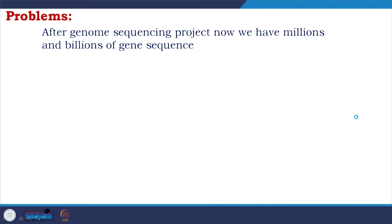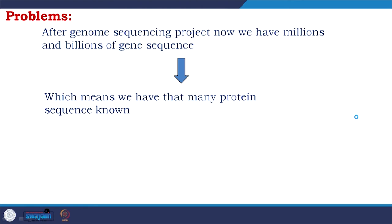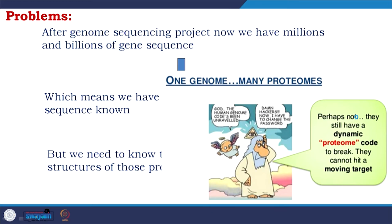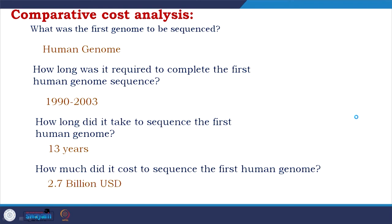We must go further to the protein level and to molecular assemblies and machineries. After genome sequencing, we now have millions and billions of gene sequences, meaning we know that many protein sequences — but we need to know the three-dimensional structure of these proteins to understand their function. As I noted, NGS opens many opportunities and lets us read sequences, but our journey starts here: going from sequence to structure, and to structural assemblies, which are yet to be done.